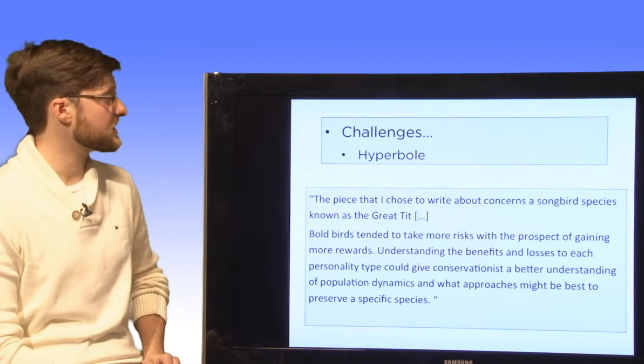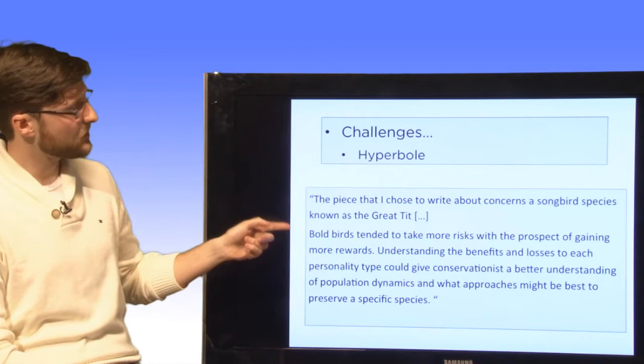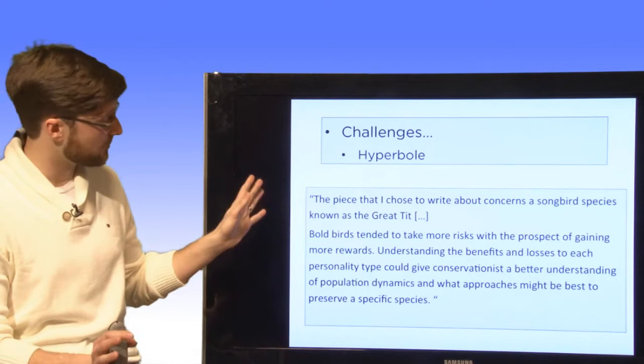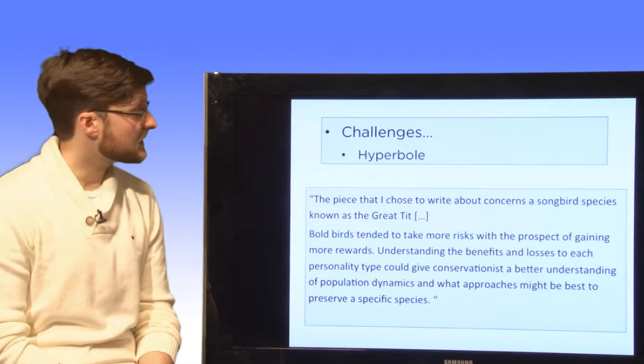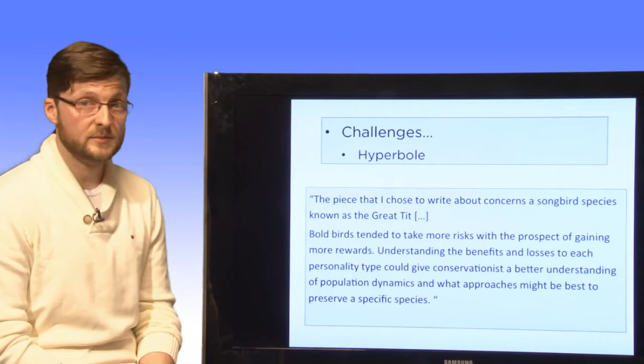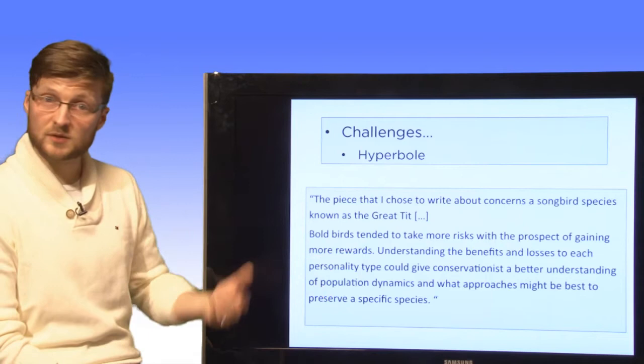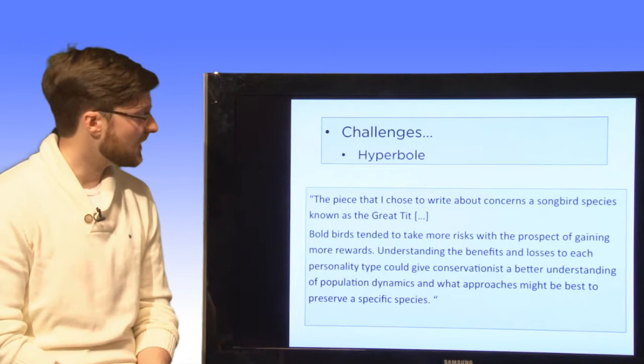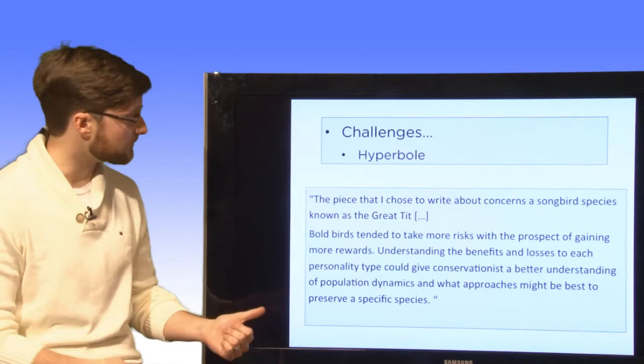But there were quite a few challenges, and the first one is hyperbole. So this was something I had to address in class. And here's another example of a well-done assignment. So this student talked about songbird species, the great tit, so they were being a little bit cheeky with their article selection. But they looked at these birds, and they were looking at how personality types amongst the birds influenced how they were organizing themselves in the community. And they made the connection that if we're looking at conservation, knowing how the birds are going to react and how different personalities in birds will lead them to do different things would help us to control these populations. So it was really great.